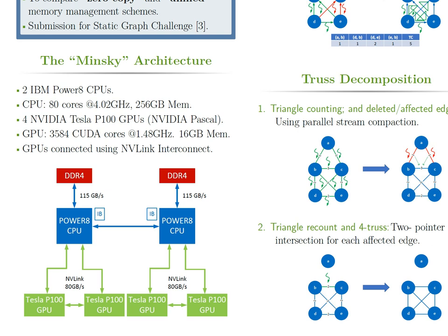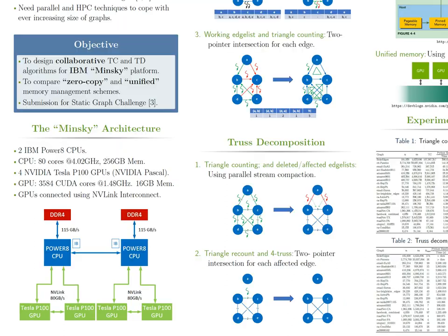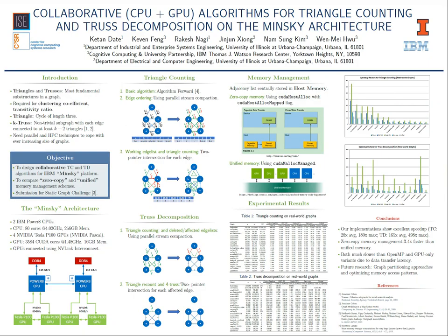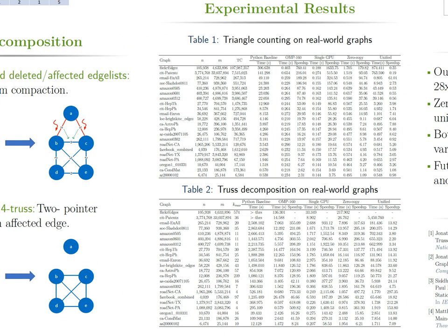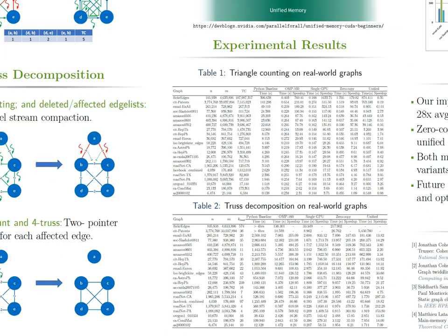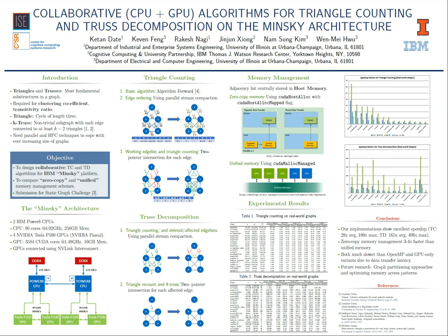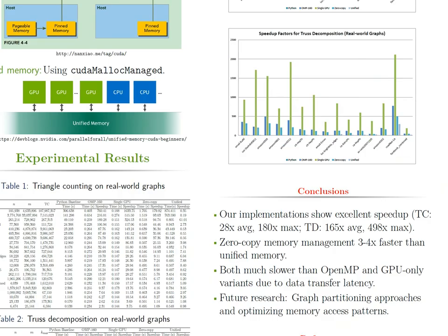This evolutionary architecture makes Minsky extremely amenable for big data analytics. We tested our collaborative algorithms on various networks and compared the performance with the baseline sequential implementation provided by the graph challenge organizers. We found that the collaborative algorithms achieved 28x speedup on average for triangle counting and 165x speedup on average for truss decomposition. We also found that the zero copy memory management scheme is on average three to four times faster than the unified memory management scheme.